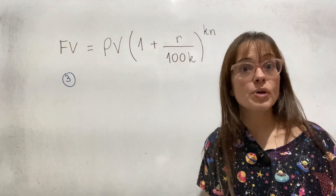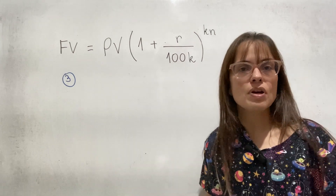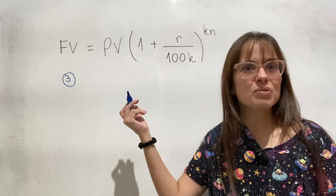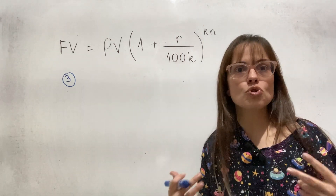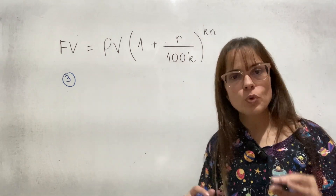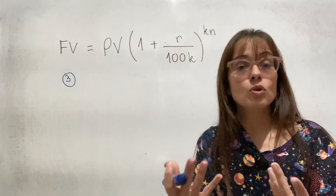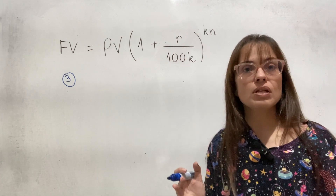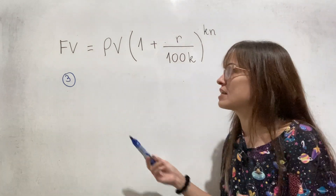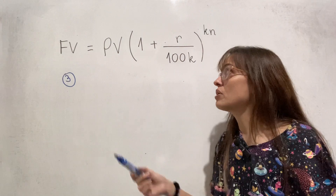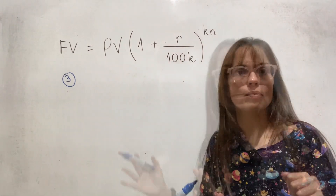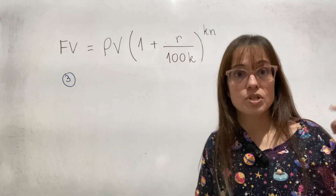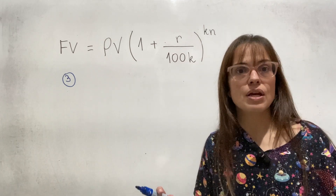So you can already understand what's going on here. The only type of variation is that this formula has many variables, giving freedom in which ones to provide and which one to ask you to calculate. I've already given an example asking for the future value and one asking for the present value. In example three, I'm going to ask for the interest rate, so I have to give you everything else.